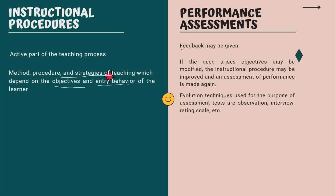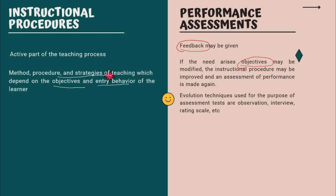The fourth step is performance assessment. Here feedback will be given. You have to check whether students have attained the objectives. Assessment can be oral or written. You can give feedback to the student and also modify the objectives or the method accordingly. If the assessment result is good, the method is correct; if not, you can change it according to the assessment result.